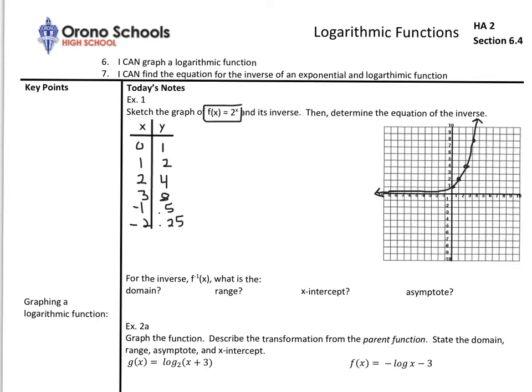But now, let's take a look at the inverse. If we sketch the graph of the inverse first, remember, we do that by simply switching the ordered pairs around. 1, 0, 2, 1, 4, 2, 8, 3, 0.5, negative 1, and 0.25, negative 2. Now plot those points and sketch your curve.